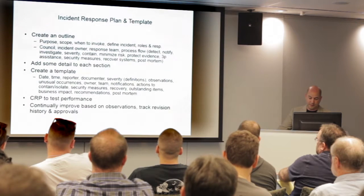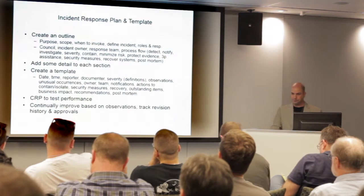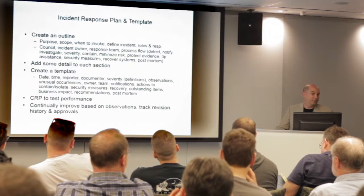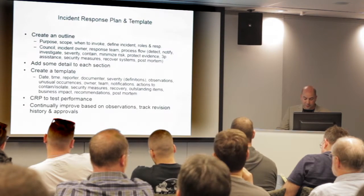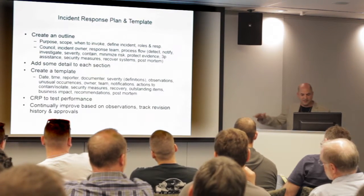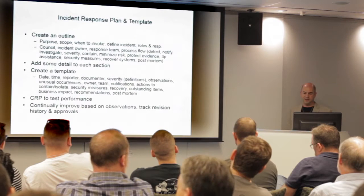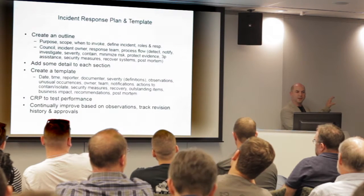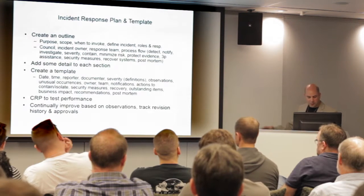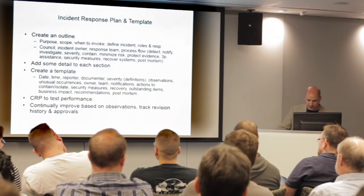One of the important things to have in your IRP is a template, because when all kinds of things are going wrong, you're not going to be taking very good notes. If you have a template that says: what's the date and time this happened, who reported the problem, who's documenting this, what's the severity — with pre-defined severity levels so people know how to classify it — and what steps have been taken. It's a lot easier to have that in place ahead of time than to figure out what you should do once something goes wrong.